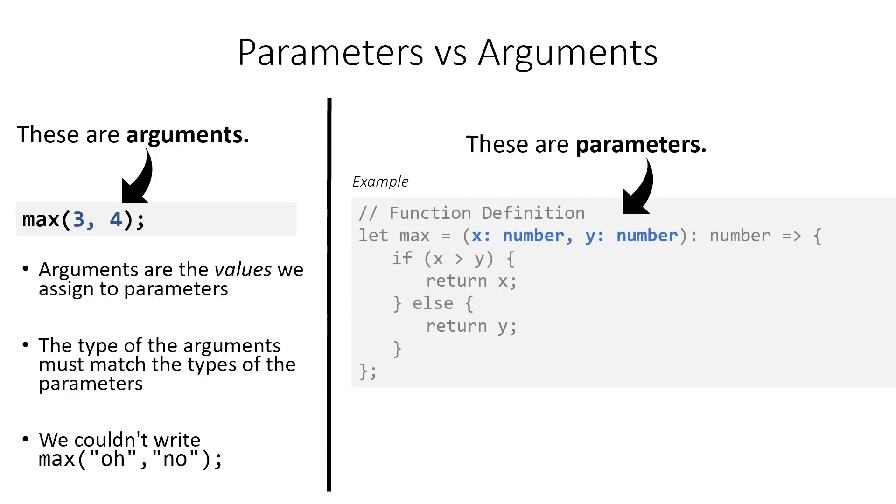When you call a function, the values that you place inside of the parentheses are called arguments. These are the actual values you're trying to give to the parameters of the function definition. The number of arguments must match the number of parameters in the function definition, as we looked at in the last slide, and the types must also match.